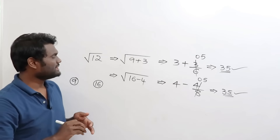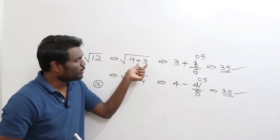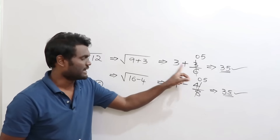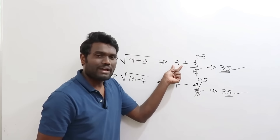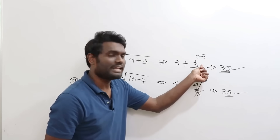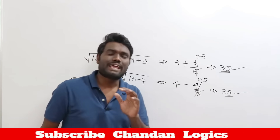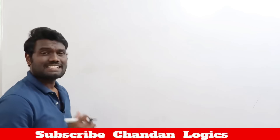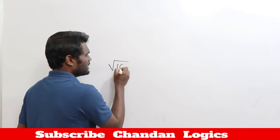Whether you use 9 or 16, both give the same answer. The simple rule is: split the number in terms of the nearest perfect square. If it is more, take a positive sign; if it is less, take a negative sign. Write the perfect square value, plus or minus whatever is more or less, divided by double of the square root of that perfect square.